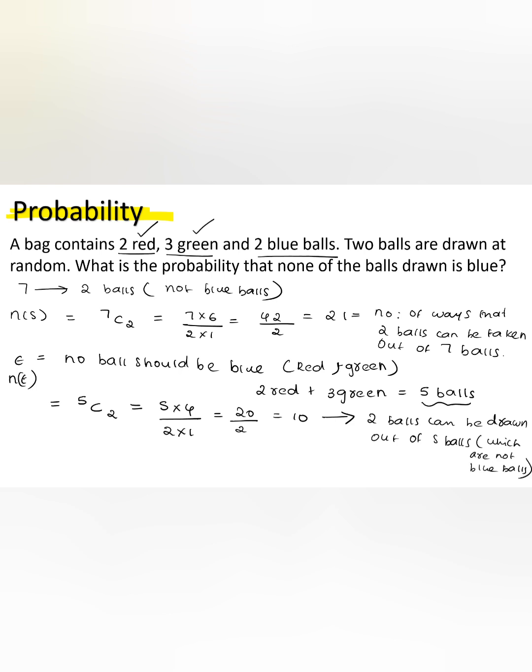Now we have to find the probability of the event. Probability of event is equal to number of events by number of sample space. That is equal to 10 by 21. This is the probability of getting that none of the balls is a blue ball.